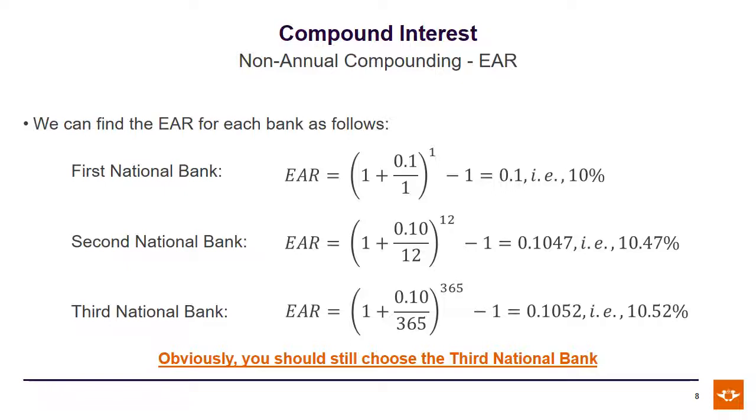The decision will be based on which one turns out to be the highest. If we look at the effective annual interest rate for the three banks, First National is 10% because the compounding period is an annual one. The Second National Bank's compounding period is monthly, and its effective annual rate is 10.4%.